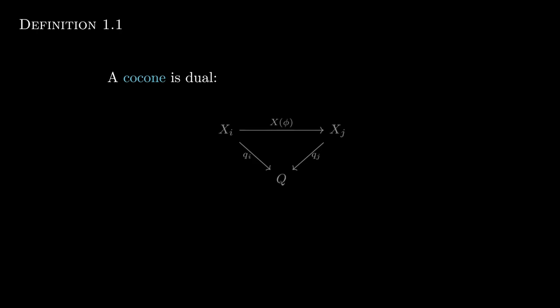Once we understand the definition of a cone, talking about a co-cone is relatively simple, because it's just dual — we reverse the arrows. But we like to have all of our arrows pointing in the same direction, so we also rearrange where the xi and xj are. We move them to the top and the object Q to the bottom, just to be consistent with the arrows.